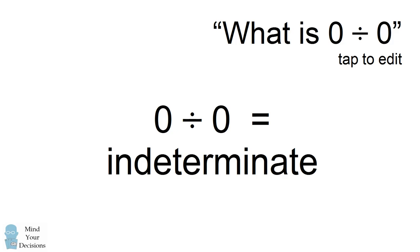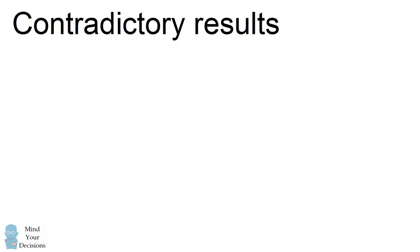So what's the problem with dividing by zero? One problem is if we could divide by zero, we get contradictory results.